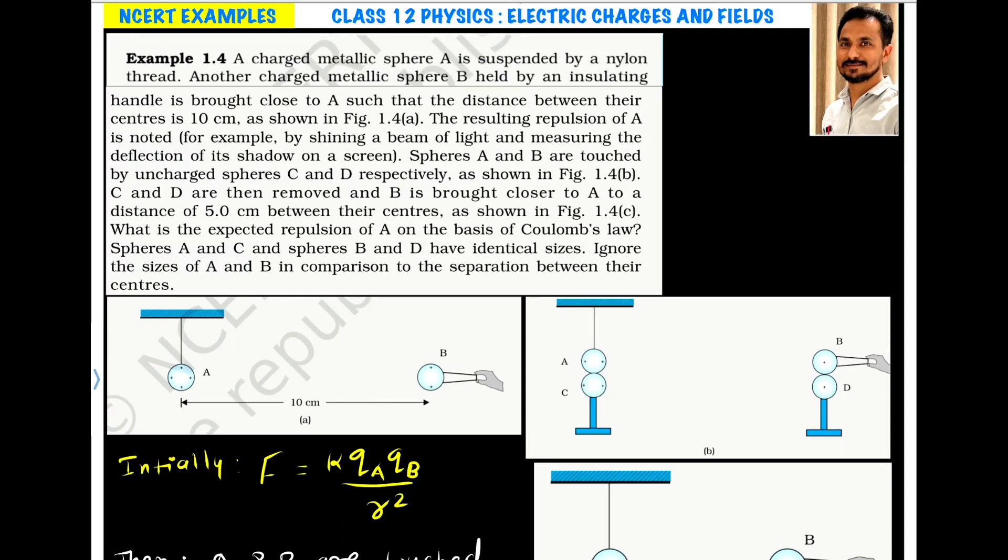Example 1.4. A charged metallic sphere A is suspended by a nylon thread. Another charged metallic sphere B held by an insulating handle is brought close to A such that the distance between their centers is 10 centimeters as shown in the figure.